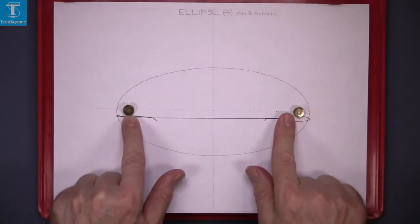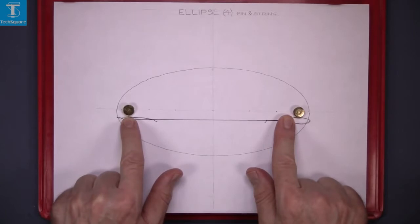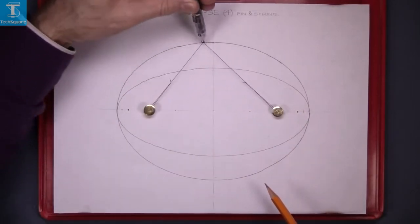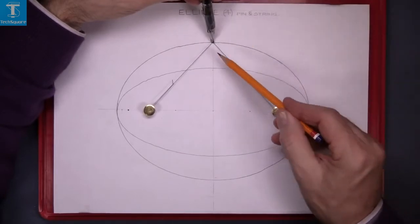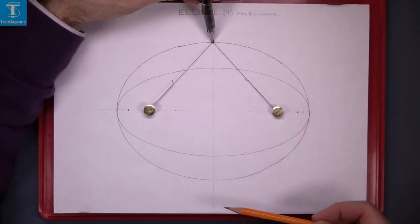Now this is the string. When it is stretched out, it is exactly the length of the major axis. When I bring it up to the top here, this is half of the major axis and this is half of the major axis.